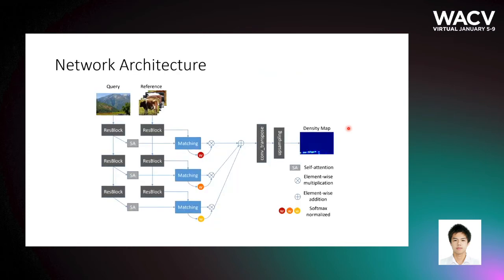This is the overall network architecture. The input of this method is a query image and several reference images, where the number of reference images need not to be fixed. For example, the query image could be a photo which contains several colors, and reference images could be a set of photos that contains some examples of colors.